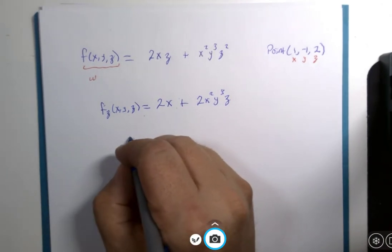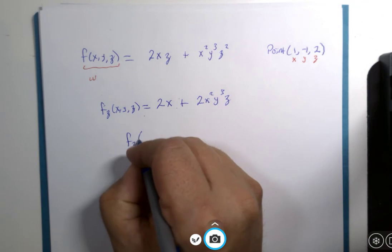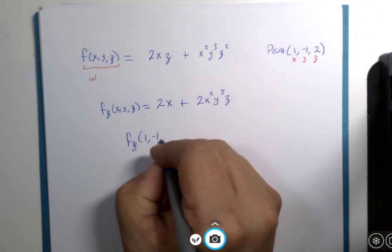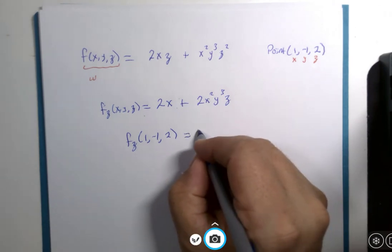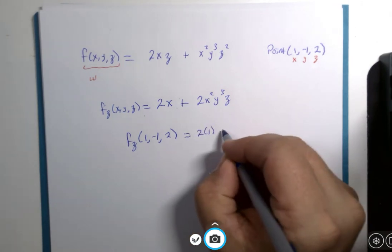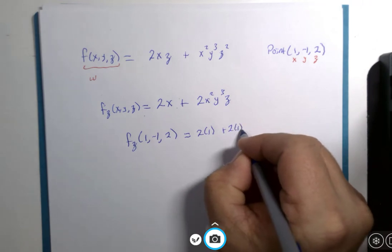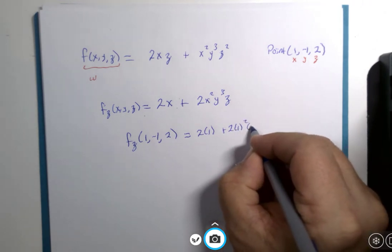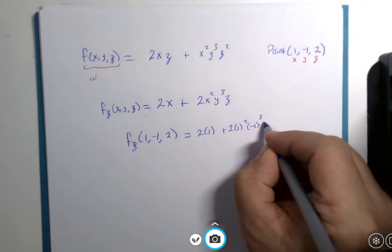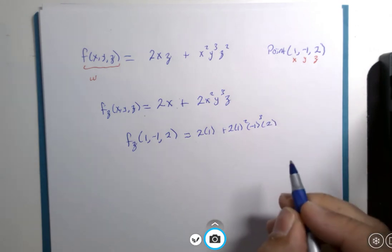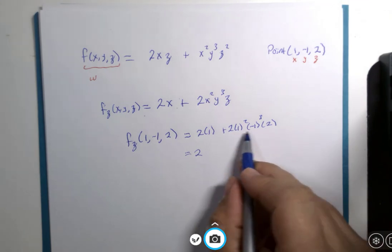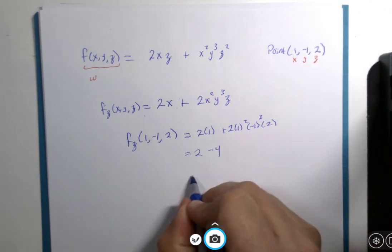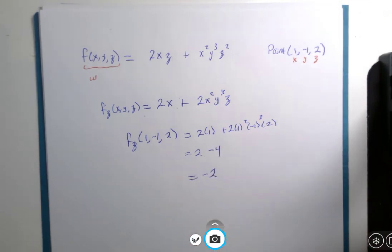If we then do this and evaluate it at the point 1 and negative 1 and 2. Let's see, that's 2 times 1 plus 2 times 1 squared times negative 1 cubed times another 2. Let's see here, that's 2, that's 4, negative 4, negative 2, I get negative 2.